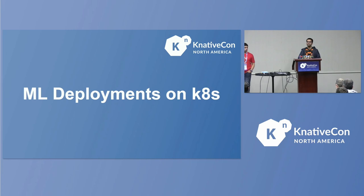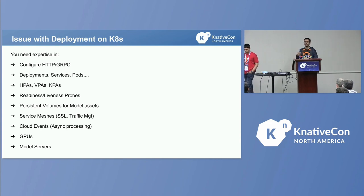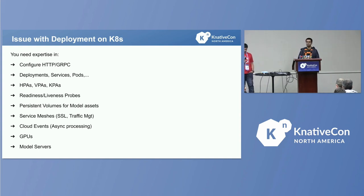If you take a look at how machine learning deployments are done on Kubernetes, you need expertise in all of these different things — being able to configure your HTTP and gRPC requests, then deployments, and how you'll define your YAML files, where you'll be defining your services, your pods. You'll also need persistent volumes for any kind of model updates and model changes, and also of course where you're required to save your model files themselves. And then you'll need things such as CPUs, TPUs, or GPUs for doing that inference on the go, and you'll need dedicated model servers.